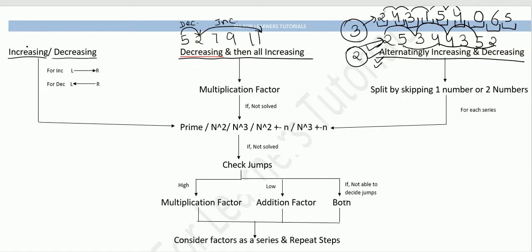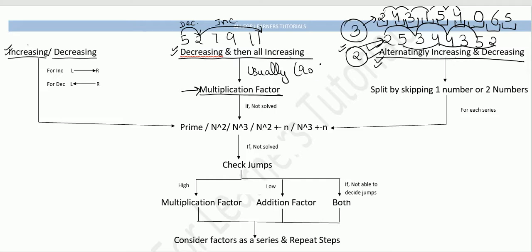You have to categorize your series into one of these three types. Once you decide the category — for example, if it is decreasing-then-increasing, check its multiplication factor, because in 90% of cases this type of series has a multiplication factor only. If the series is a combination of sub-series, first split it by skipping one number.